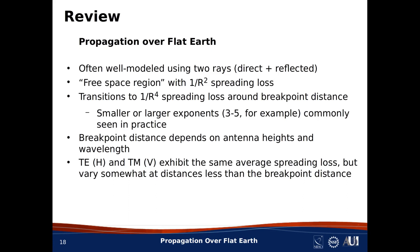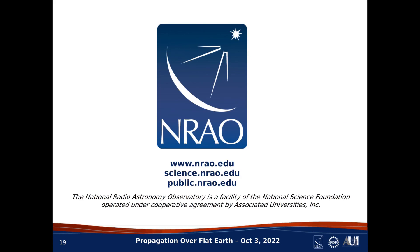Finally, we observe that the TE and TM components — what you might alternatively call the horizontal and vertical components of the wave — exhibit the same spreading losses on average. The differences between TE and TM are apparent only for distances short of the breakpoint distance, because the behavior of the TE and TM reflection coefficients differs when the angle of incidence on the flat earth is not nearly grazing. That concludes this talk on propagation over flat earth. Thanks for listening.